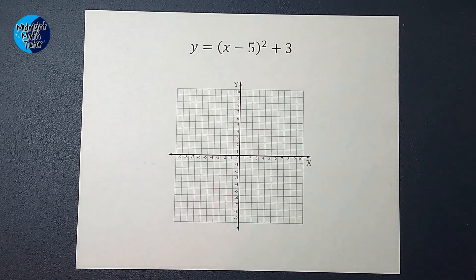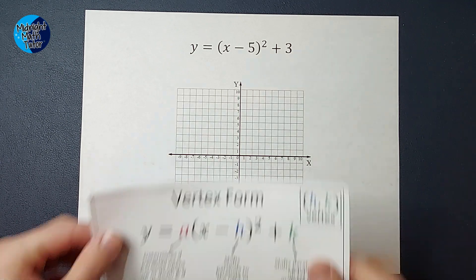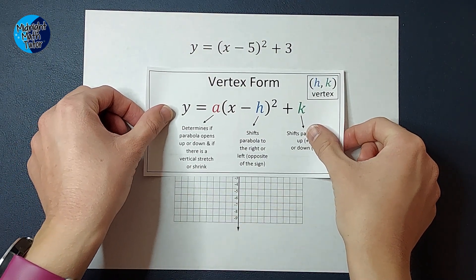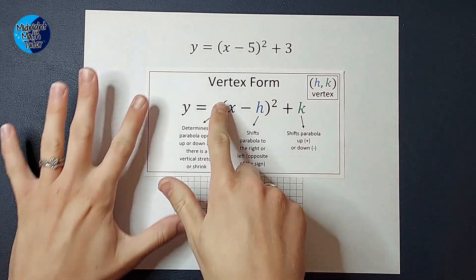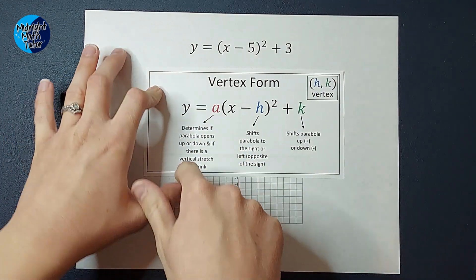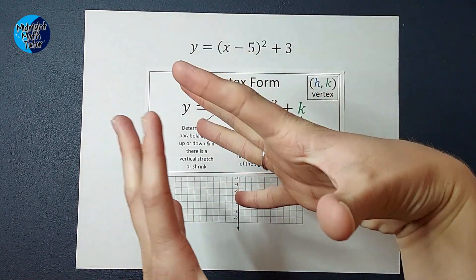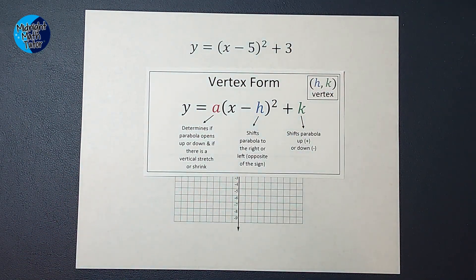All right, so when I am in vertex form, this is going to have a lot of words. If you're a person who likes to read it, this is for you. Take a screenshot. If you don't like to read it, just listen to me and I will explain what all of this is. The a is what we already talked about. It'll decide if it gets stretched or shrunk. It also will determine if the parabola opens up or down.